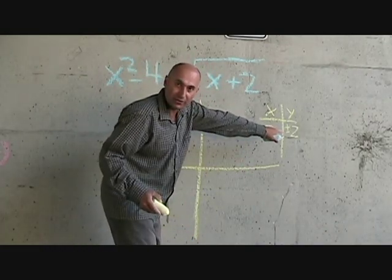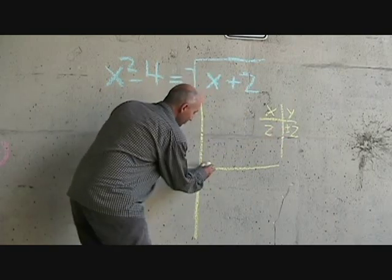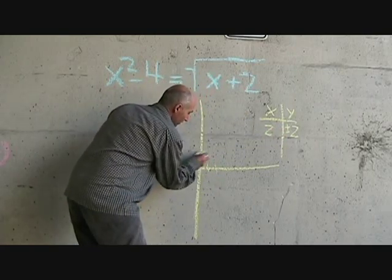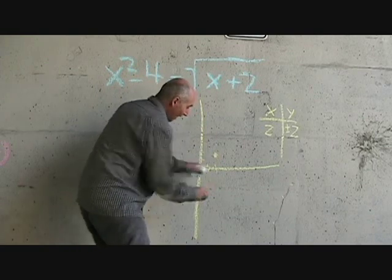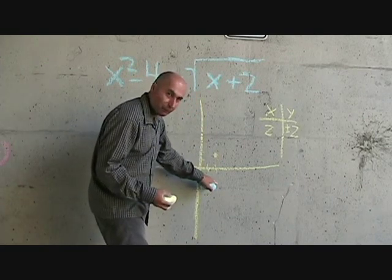So when x is 2, y is 2, plus or minus 2. So when x is 2, y is 2, and negative 2. But we're not going to put that point in there.